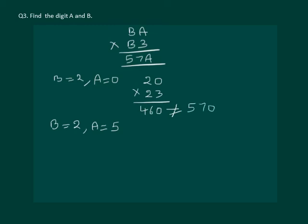So let us move ahead to B equal to 2 and A equal to 5. We have 25 multiply by 23. On multiplying we get 575.